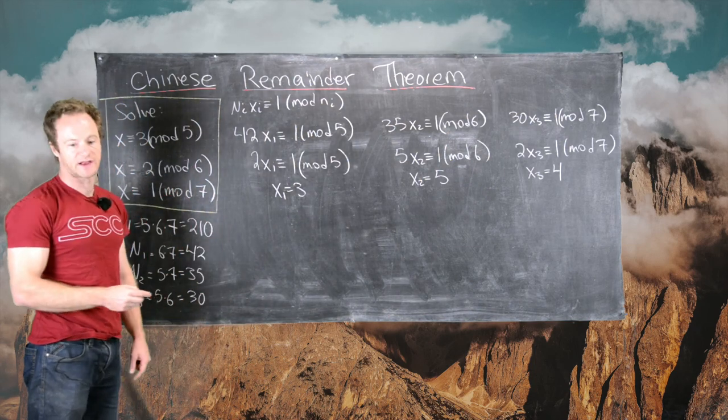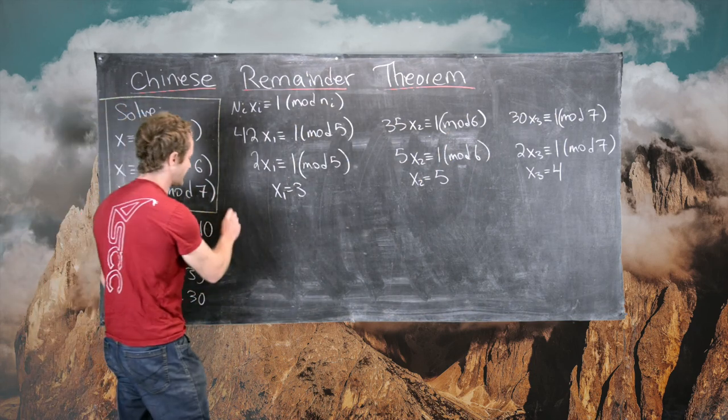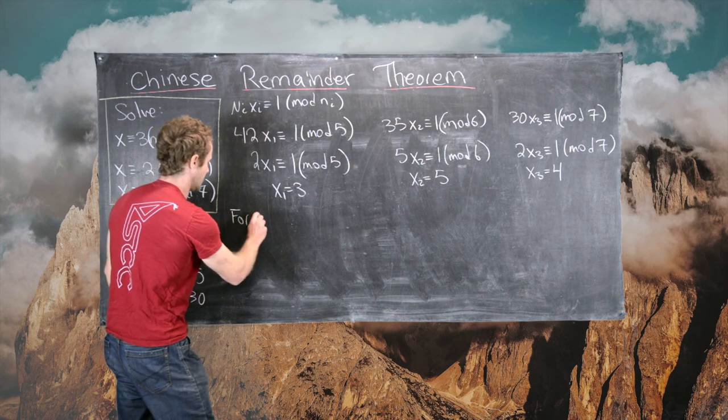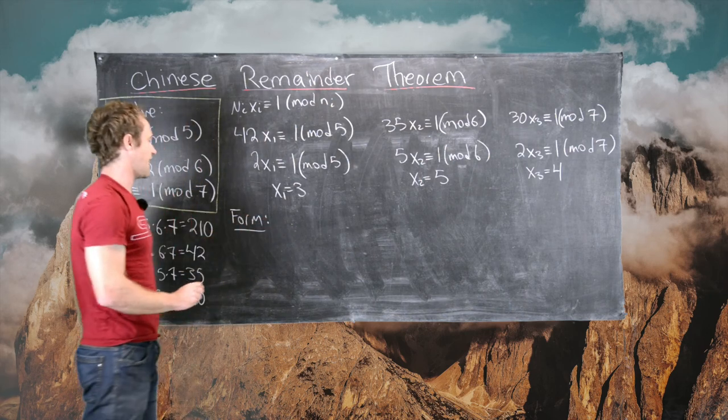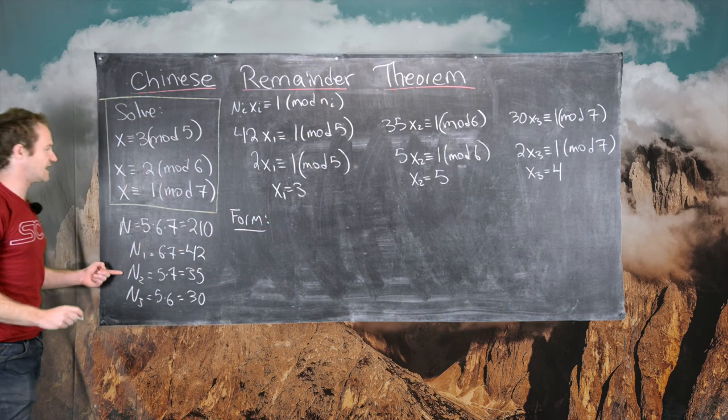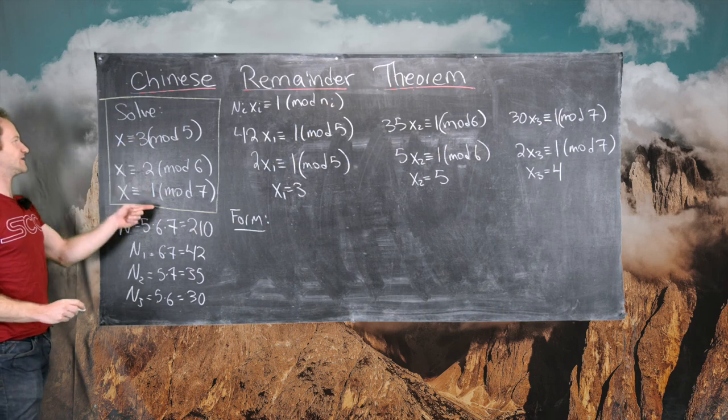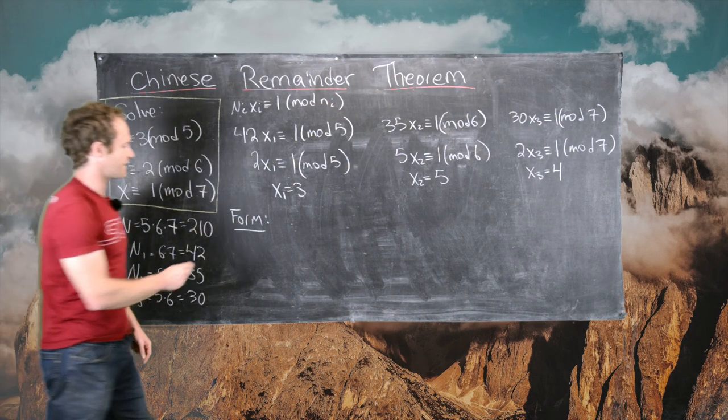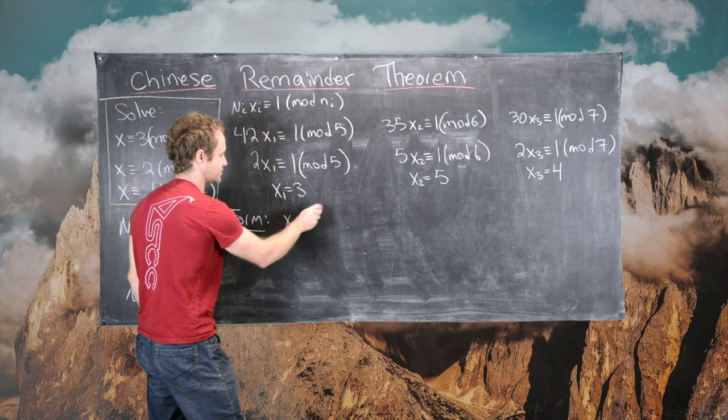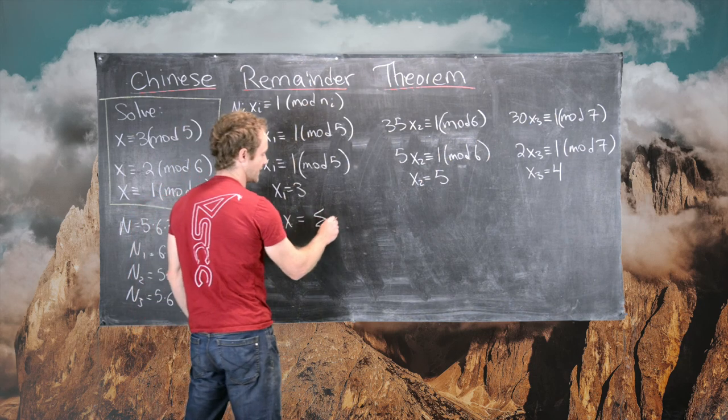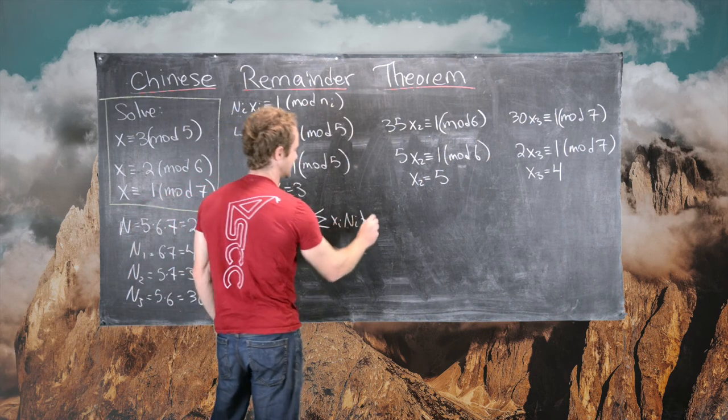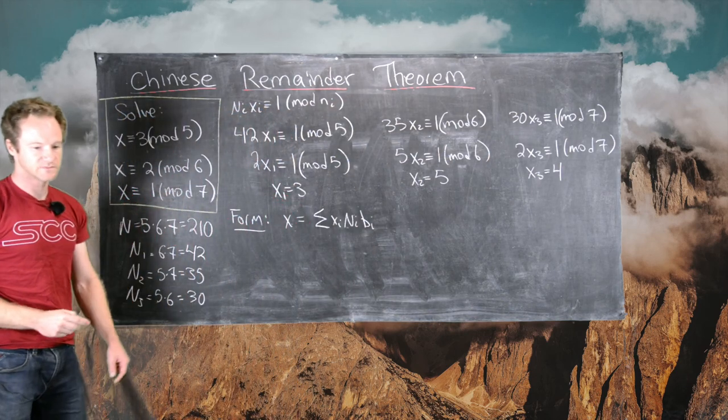So now we have X1, X2, and X3, and now we form the following combination of the XIs, the capital NIs, and the BIs, which are in this column. So we want to form X, which is the sum of the Xi, the Ni, times the Bi.